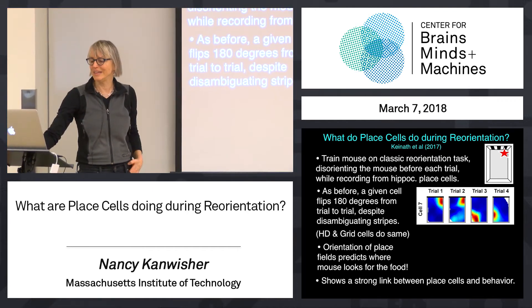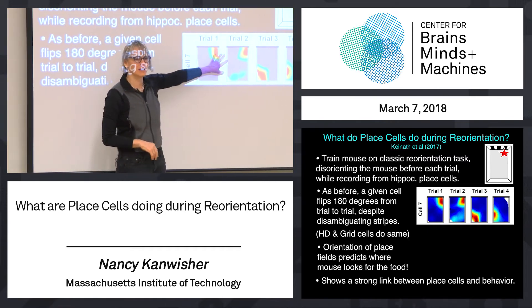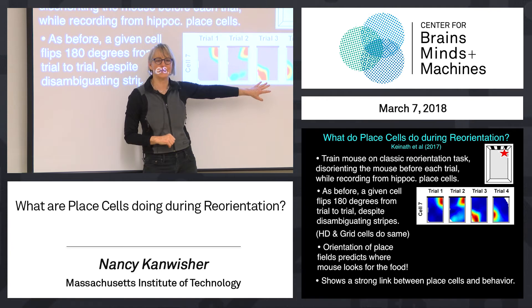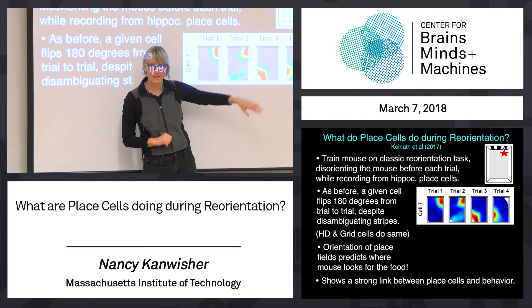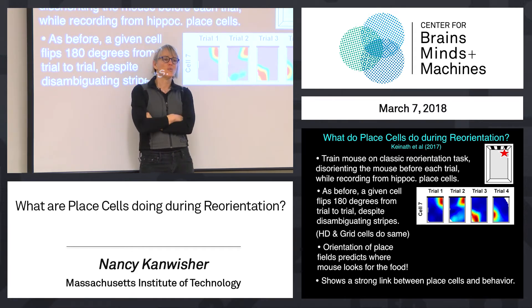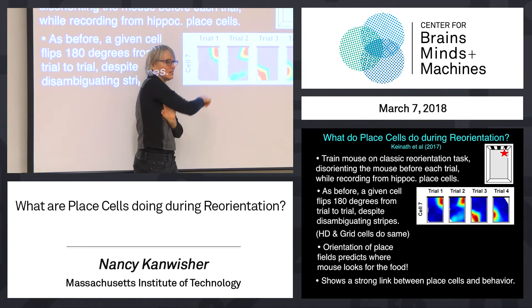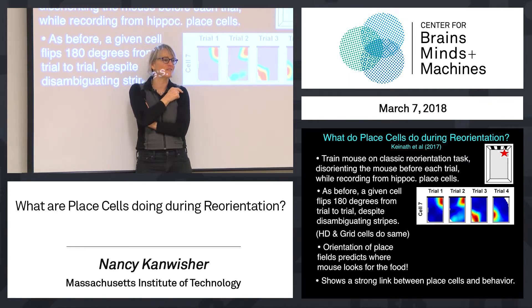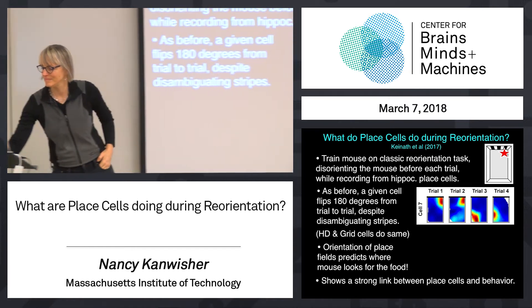As before, you find that a given cell can flip 180 degrees from trial to trial — it can be up here on some trials and down there on other trials. That's just replicating what they found in the first experiment. Now the question is: since he's trained to go find the food, where does he go look? And what does it have to do with the place cells? The answer is the corner that he looks in is absolutely predictable by what the place fields are doing — in fact, what the place fields are doing before he even starts to go look for the food. You put him in the box, and before he even starts toward a corner, you can see what the place fields are doing.